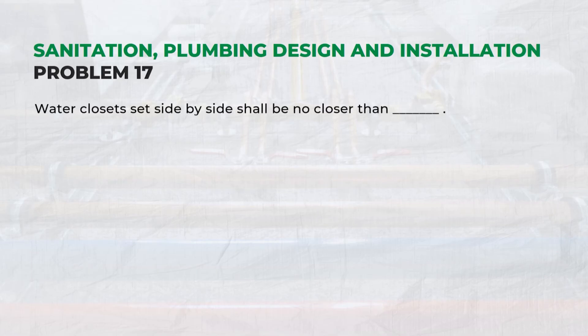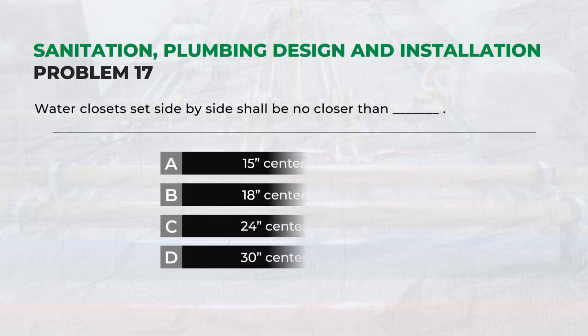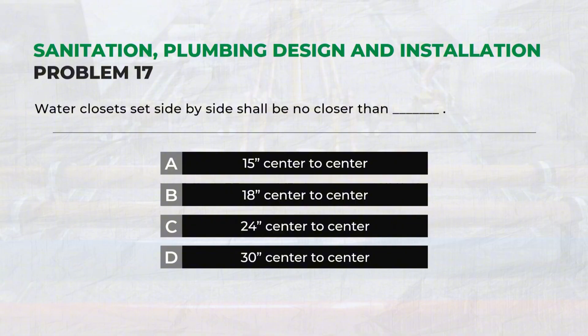Water closets set side by side shall be no closer than — Answer: D. 30 inches center to center.